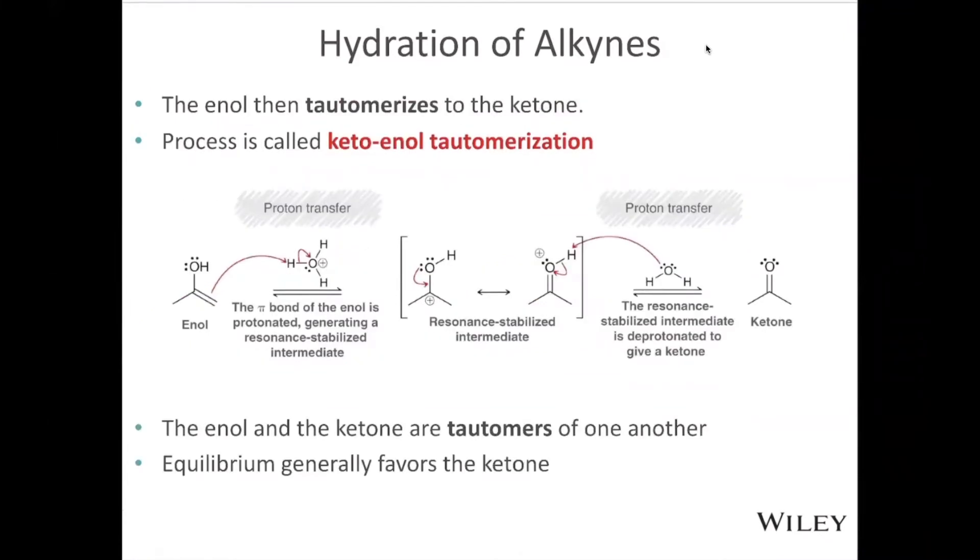A little more information about tautomerization that we were talking about. Tautomerization can happen under acid conditions, which I'll show on this slide, or base conditions, which I'll show in just a second. And this process is actually called keto-enol tautomerization.